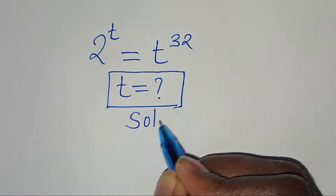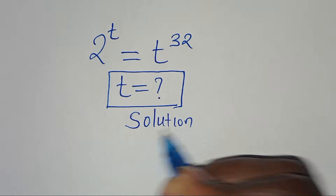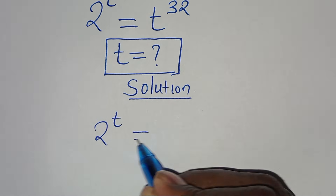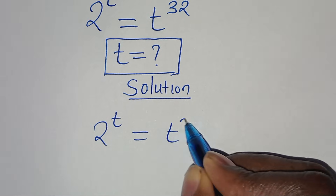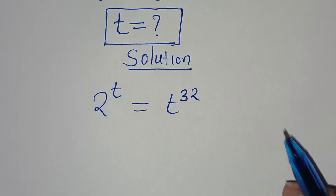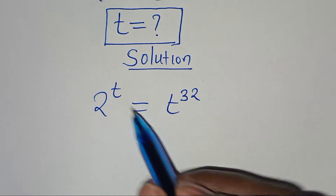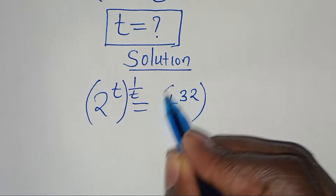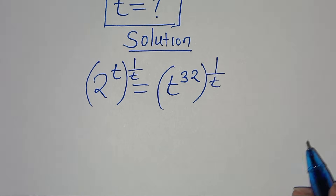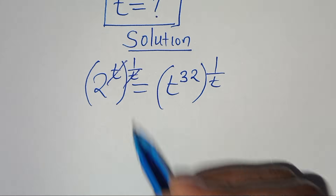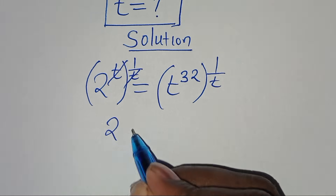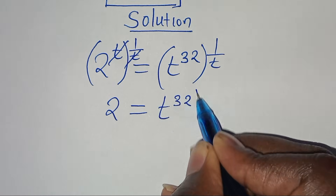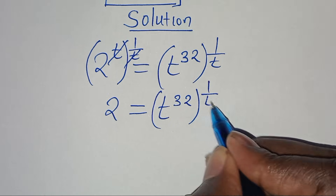Now let's provide a solution. We have 2 to the power of t equal to t to the power of 32. The first step is to eliminate this power, and that means we multiply both sides by 1 over t. We simplify t and t here, so that we have 2 equal to t to the power of 32, raised to the power of 1 over t.